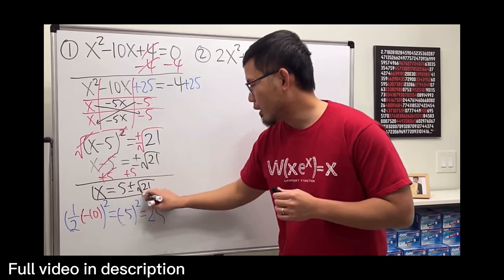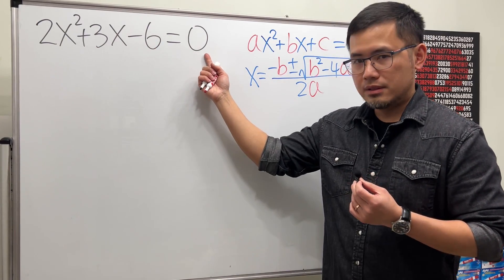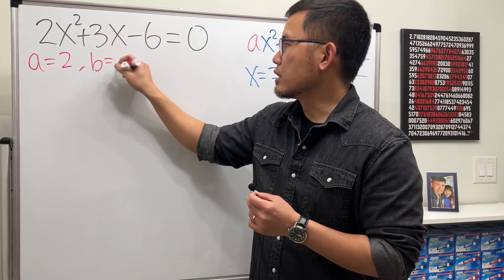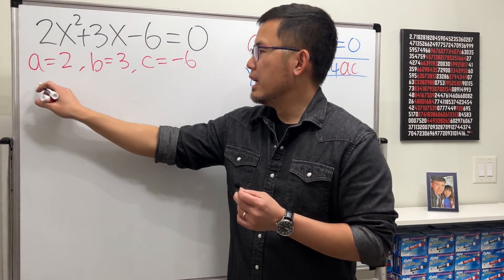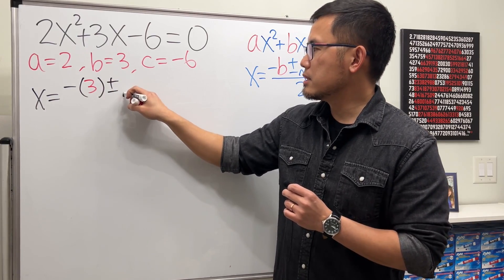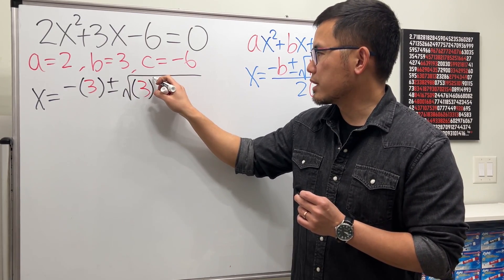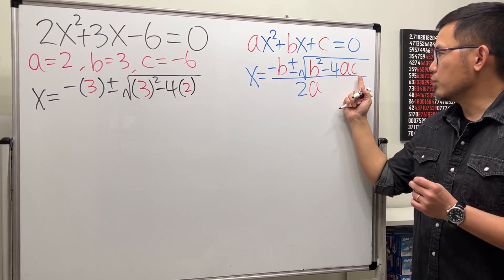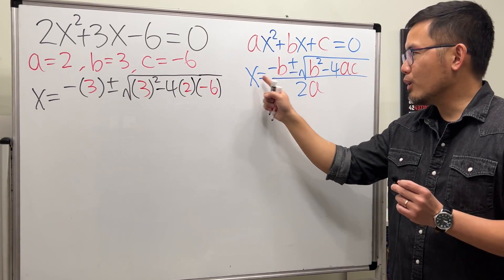Now for the second example: we have 2x² + 3x − 6 = 0. We already have zero on one side, so this is in standard form. A is the coefficient of x², which is 2. B is the coefficient of x, which is 3. C is the constant term, which is negative 6. Throwing this into the formula: x equals negative b (which is 3), plus or minus the square root of b² (put parentheses around 3) squared, minus 4 times a (which is 2), times c (which is negative 6), all inside the square root, divided by 2a which is 2 times 2.